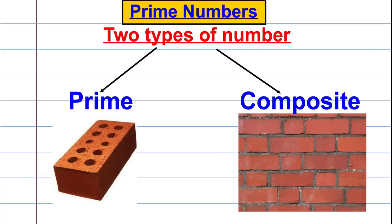There are two types of numbers, to simplify things to start with. There are prime numbers and there are composite numbers. I've put a picture beside each of those ideas to try and let you understand what I might mean by that. Take a second to think what you think I mean by those pictures.